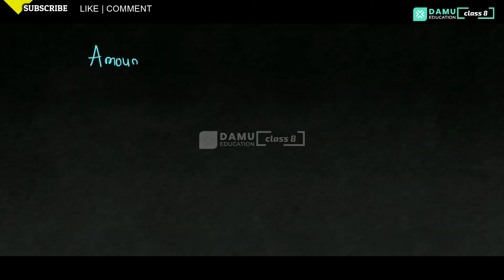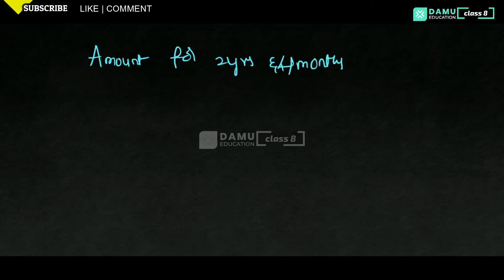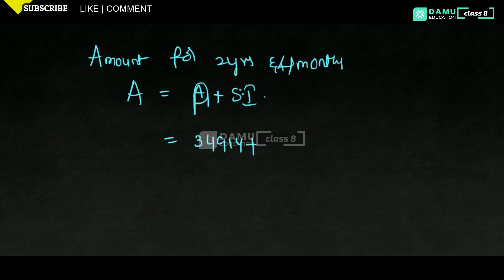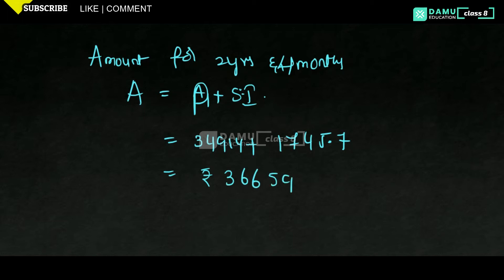The total amount for 2 years and 4 months is the principal after 2 years plus the simple interest: A = 34,914 + 1745.70 = 36,659.70 rupees. This is the final amount Kamala needs to pay to clear the loan.